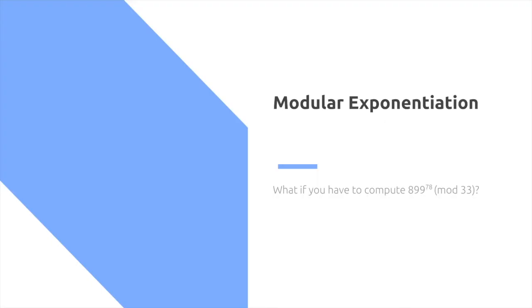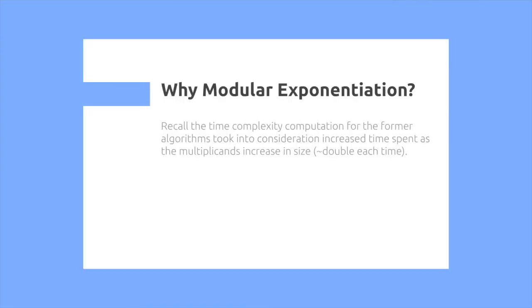So what about modular exponentiation? What if you need to compute 899 to the power of 78 mod 33? So before we realized that we had the factor of numbers getting larger, increasing the time it took to actually multiply the numbers, as it was doubling in size roughly each time.